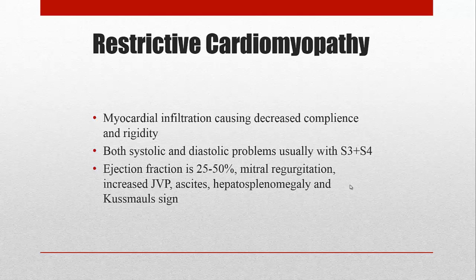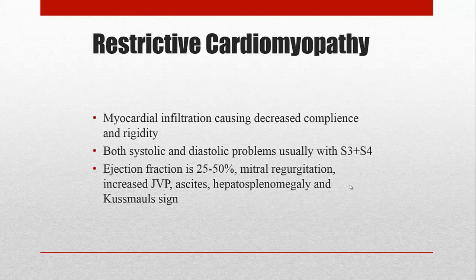The last cardiomyopathy is the restrictive type. Here the main problem is myocardial infiltration — toxic substances infiltrate the heart, lower its compliance, and cause it to become rigid. There will be both systolic and diastolic failure, and with these two problems you will hear S3 and S4 heart sounds. The ejection fraction can range from subnormal to very low. You will see mitral regurgitation, increased jugular venous pressure, ascites, splenomegaly, and Kussmaul's sign — where jugular venous pressure rises upon inspiration, the opposite of normal.